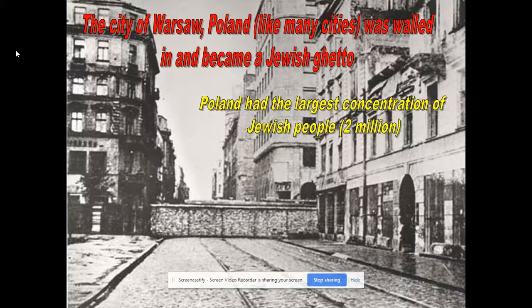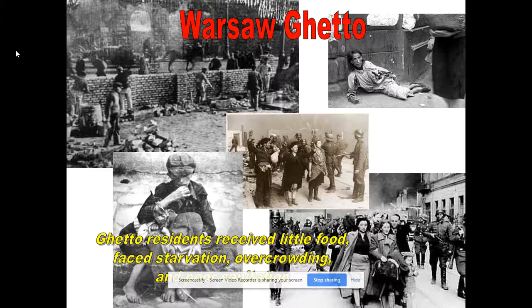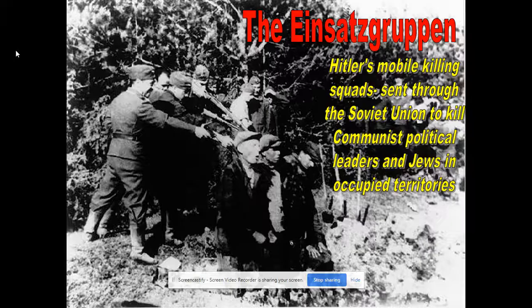About two million were pushed into the ghettos, confined to just a couple of square miles — only about three percent of the city's size. About 400,000 Jews were walled off in Warsaw alone. The Warsaw Ghetto had rampant starvation, massive disease, and poor sanitation. There was a Warsaw Ghetto uprising, but the Nazis were able to put it down.